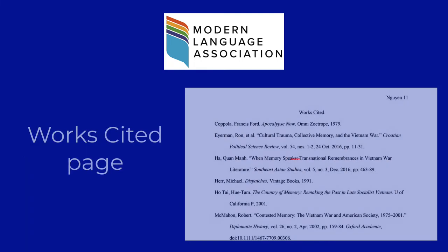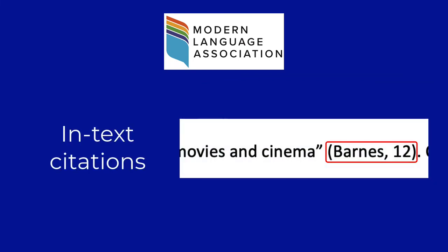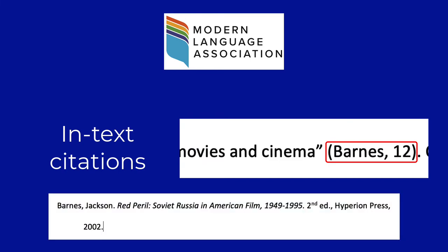And finally, an MLA formatted paper will include a works cited page at the end of the paper, as well as citations within the body of the paper itself. The citations in the text will correspond with the works cited page at the end of the paper. Although in-text citations are one of the last things one normally works on when writing a paper, we're going to look at them first today, since you encounter them first as a reader.